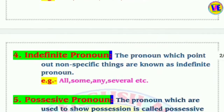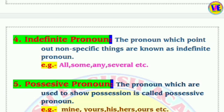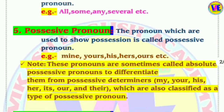Next is indefinite pronoun. The pronoun which points out non-specific things is known as indefinite pronoun. 'Indefinite' means which is not definite in meaning. Its examples are: all, some, any, several.